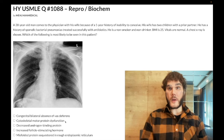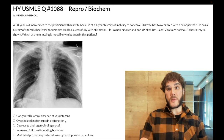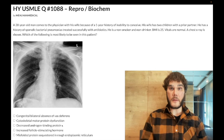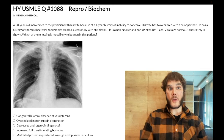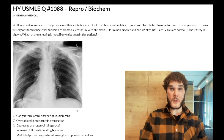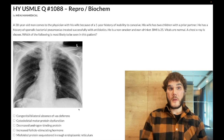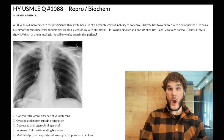In Kartagener syndrome, also known as primary ciliary dyskinesia, a cilium is composed of a nine-by-two arrangement of microtubules. The defect is a dynein arm defect. Sperm will be present in a sample but with decreased motility, because you need cilia for sperm to function properly. In cystic fibrosis, you'll have absent sperm. In a female with Kartagener syndrome, there's an increased risk of ectopic pregnancies due to poor cilia function within the fallopian tubes.